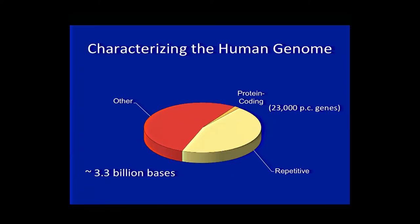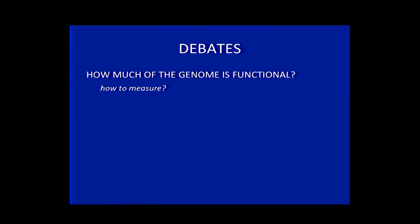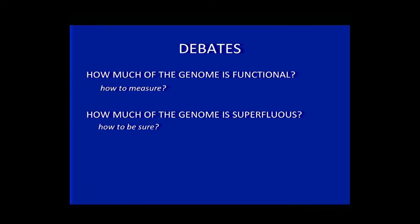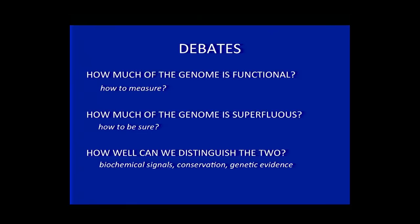In the early years of genome study, guided by the central dogma, the focus was on protein-coding regions. At first, scientists were estimating that there were as many as 100,000 protein-coding genes. Now that we know there are only 23,000, the question is: what does the remaining 98 percent of the genome do? Despite having a sequence of the genome, there is still a raging debate. How much of it is functional? How much of it is superfluous? And how well can we distinguish between the two?